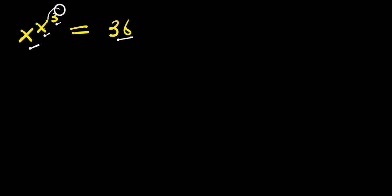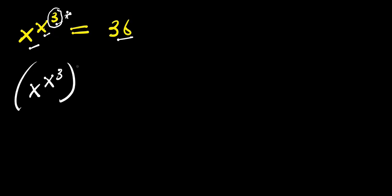Now observe, we have power 3 here, and because of this we are going to raise each part of this equation to the power of 3. We have x power x power 3, raised to the power of 3, and this equals 36 raised to the power of 3.